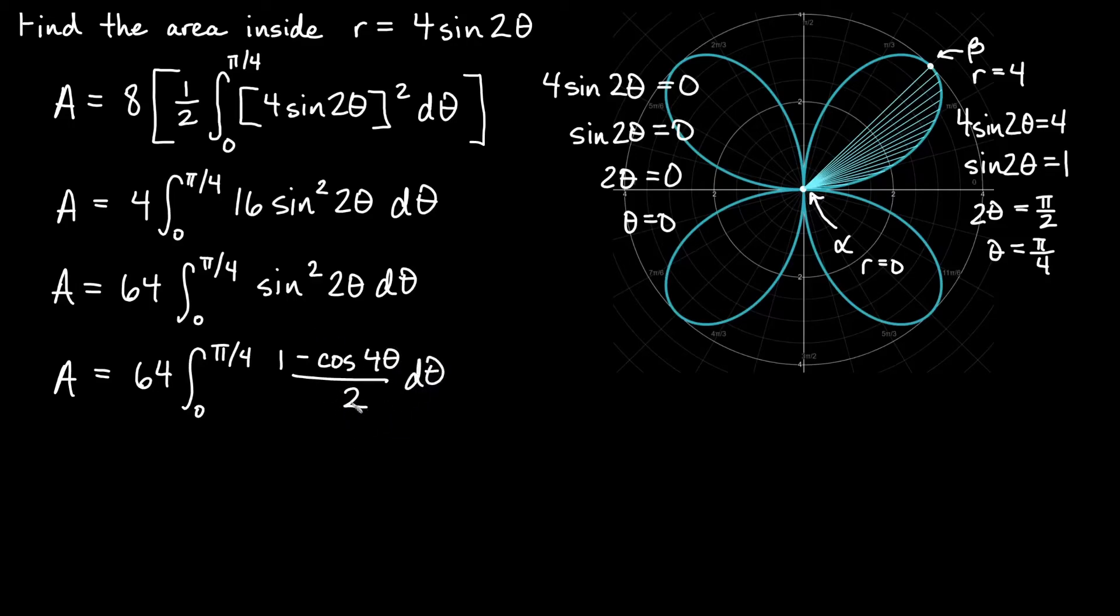Just so I don't have to deal with fractions, I'm going to bump the one half out. Everything's over two, so I can do that. We'll say 32 out here, integral from zero to pi over four, and then we just have 1 minus cosine 4 theta. Those are not so bad to integrate now.